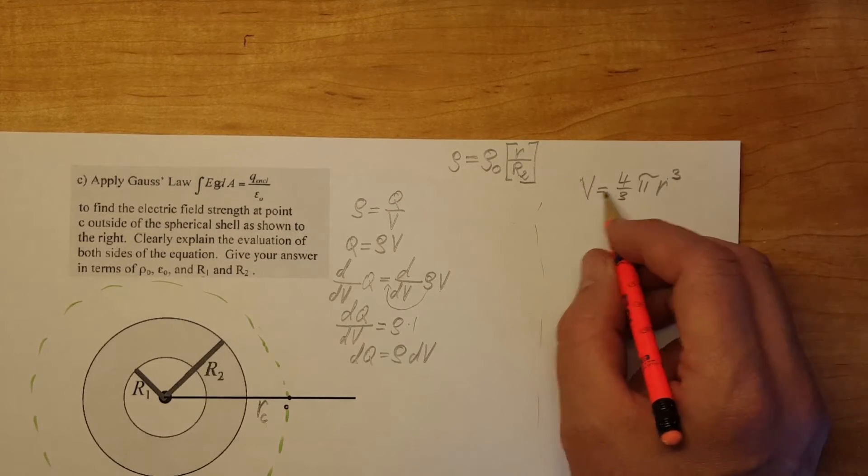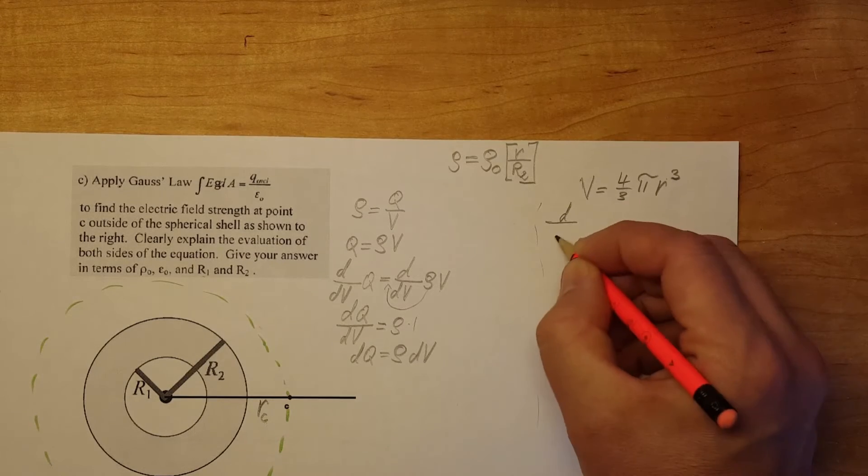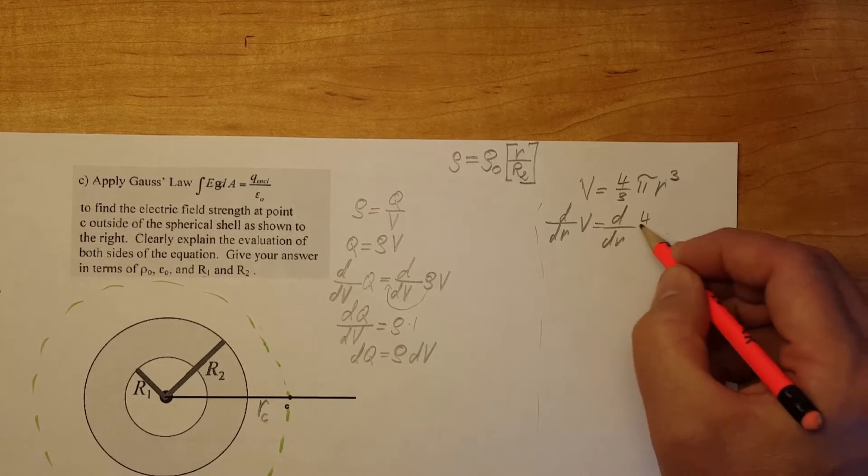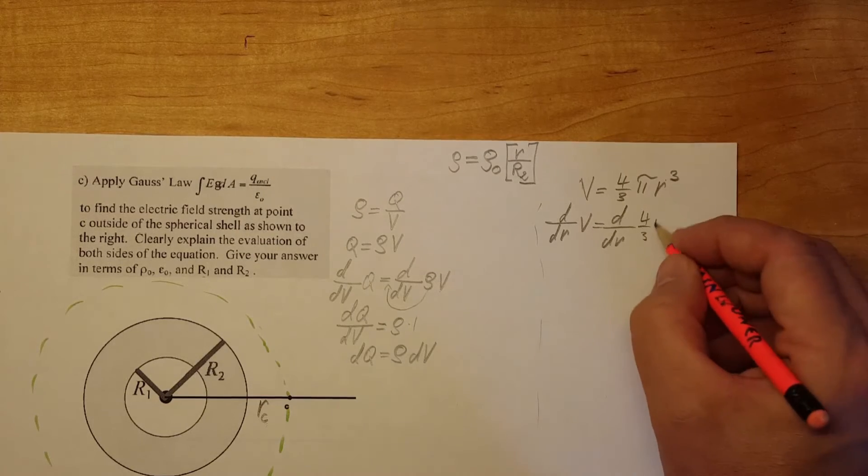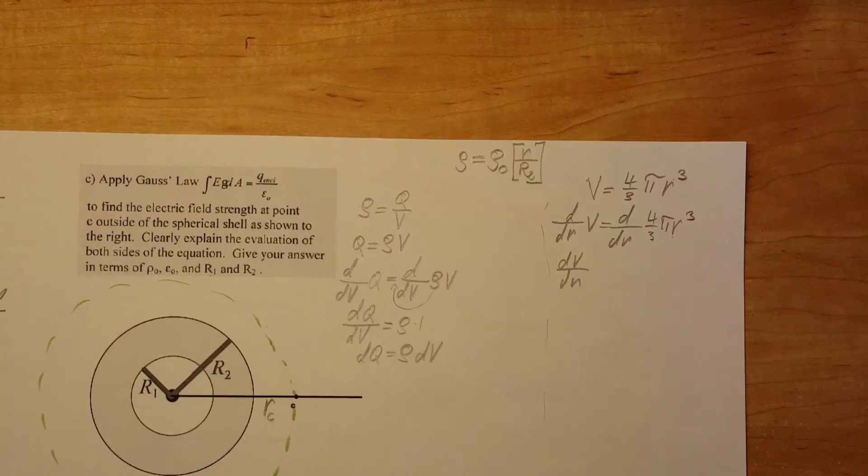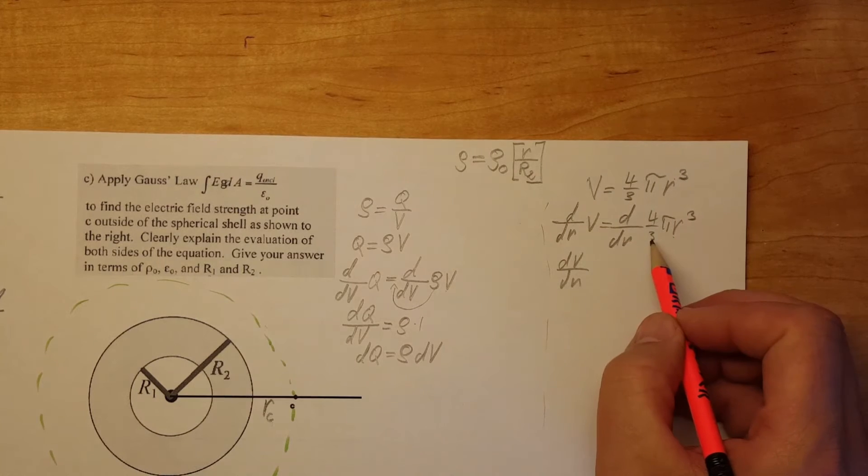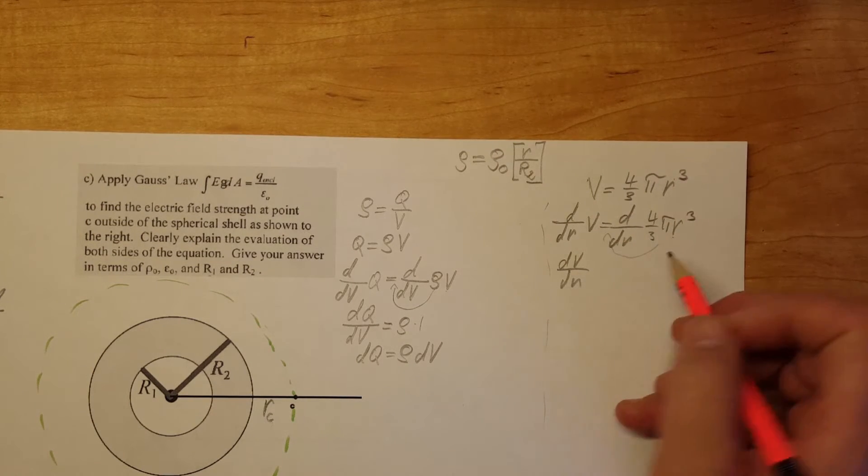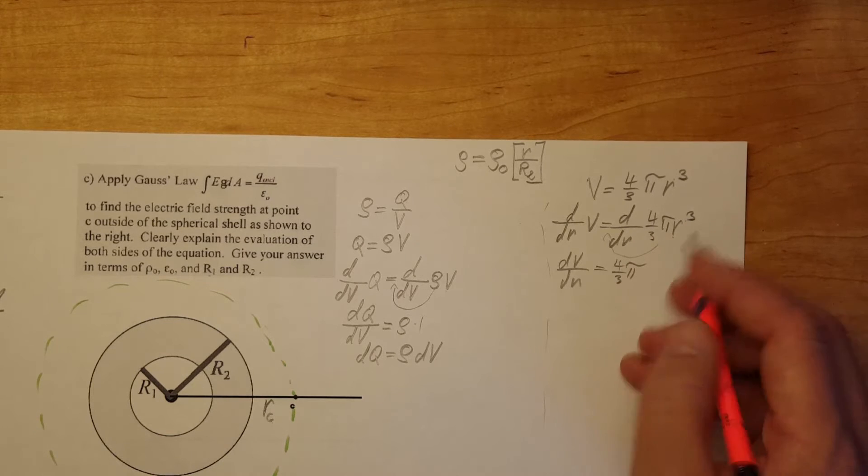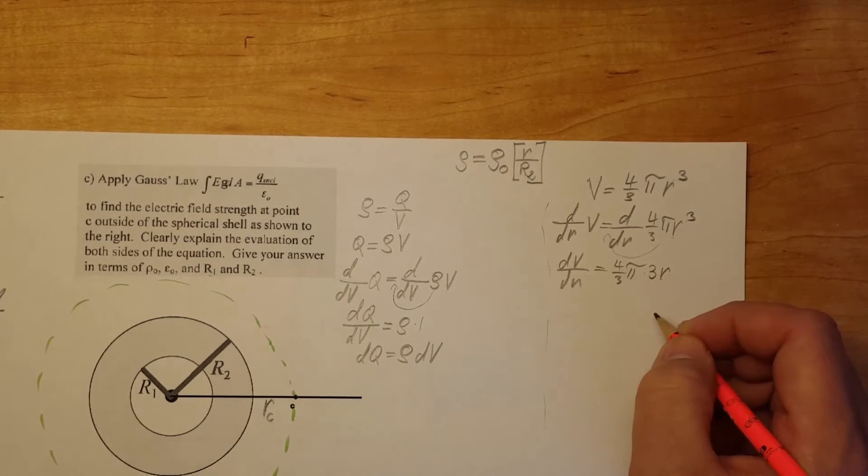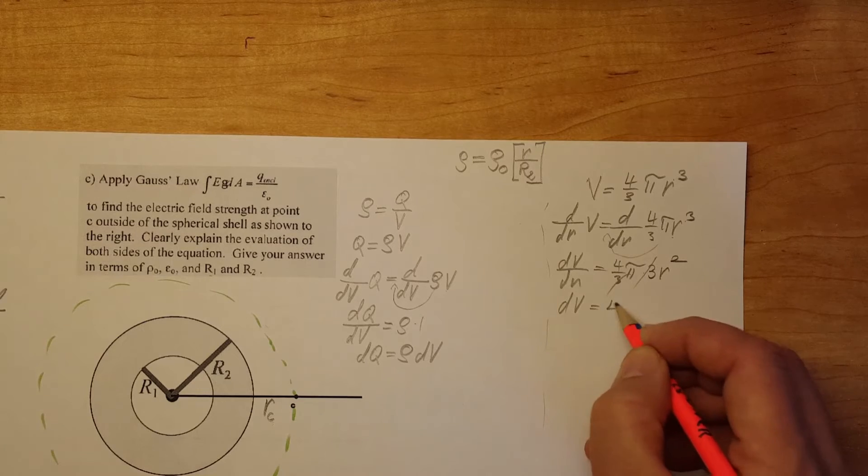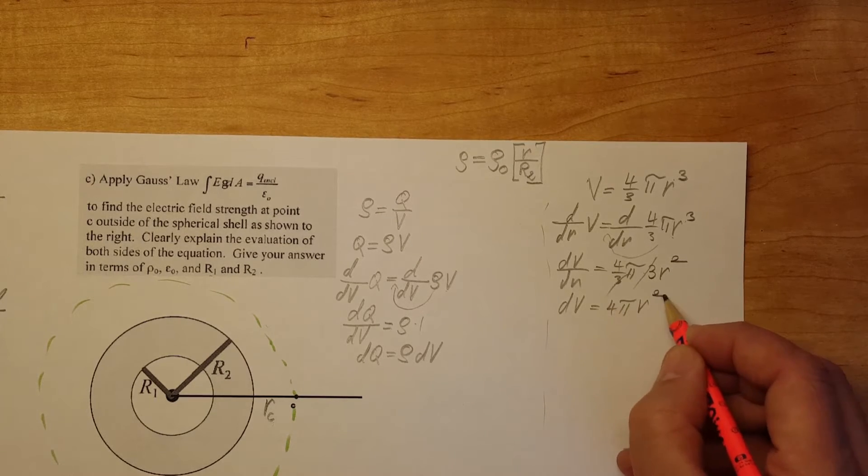We're going to take a derivative of both sides with respect to R. So d dR of V, d dR of this whole thing 4 3rd pi r cubed. And we can 4 3rd pi is constant so we can move it in front of our derivative. 4 3rd pi and the derivative of R cubed will be 3 times R to the second the 3rd pi goes away. So we're going to have dV equals 4 pi r squared dR.